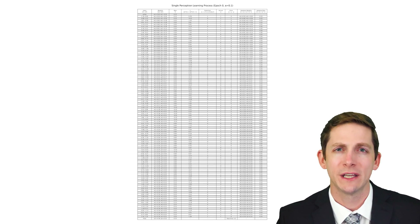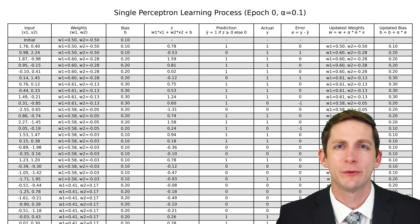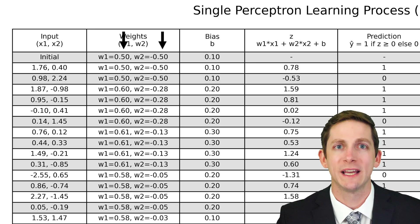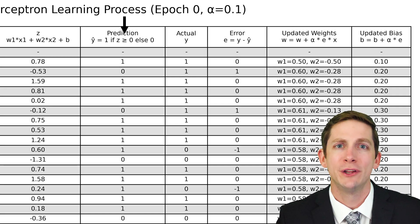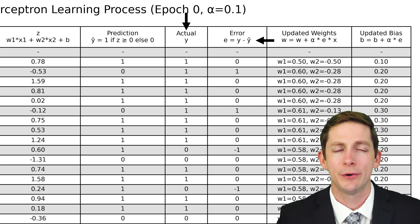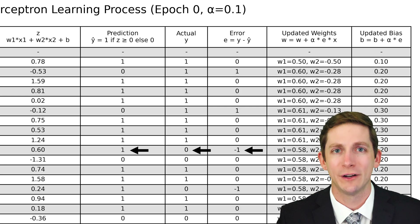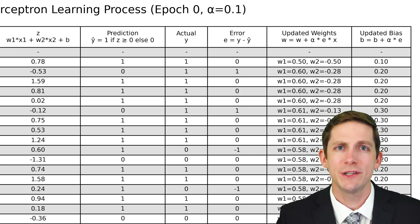Let's look at a table that shows the values and calculations for one epoch. In one epoch, a forward pass is performed on all 100 data points, and the weights and bias are updated based on how the predicted value compares to the actual value. Here we have inputs x1 and x2, which are an ordered pair representing one point on the graph. In step 1 we set these random weights and a bias. In step 2, the forward pass first calculates the weighted sum z, then passes that value into the activation function to get the predicted output y-hat, which will be 0 or 1. Step 3 is to calculate the error. The error equals the actual output minus the predicted output. If the actual output is 1 and the prediction is 1, the error will be 0. If the output is 1 and the prediction is 0, the error is 1. When the actual output is 0 and the prediction is 1, the error will be negative 1.